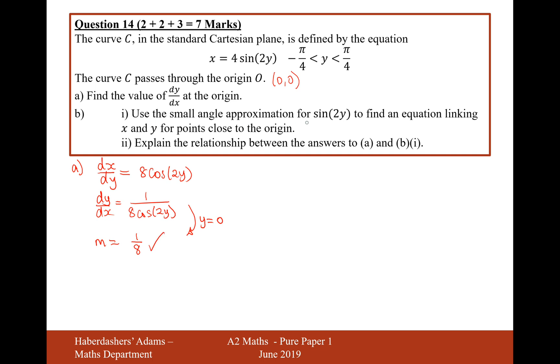Use the small angle approximation for sine 2y to find an equation linking x and y for points close to the origin. So sine 2y is going to be approximately 2y when y is small. Therefore, x is going to equal 8y when y is small.